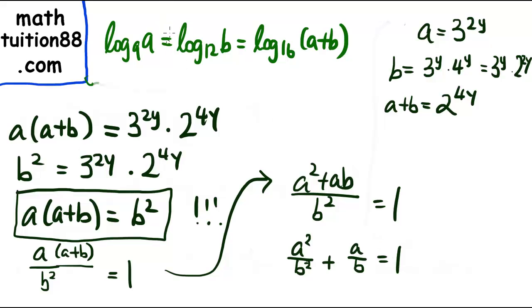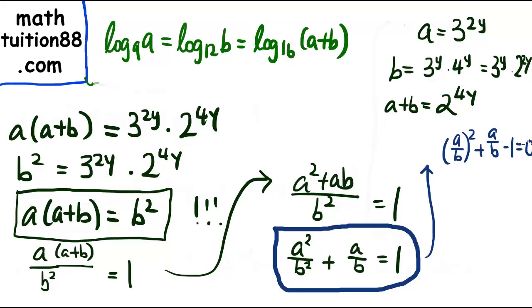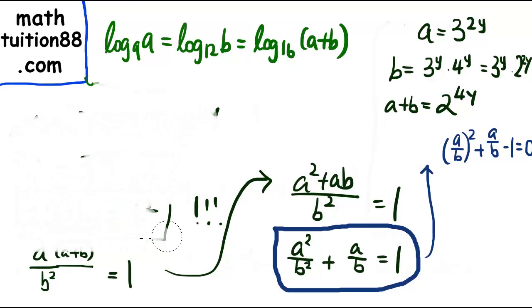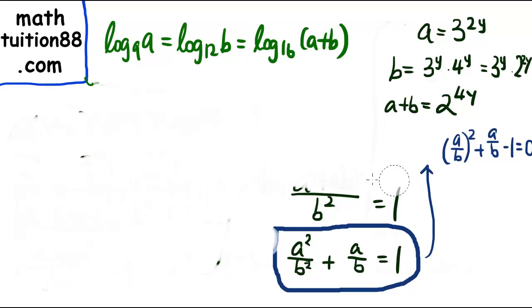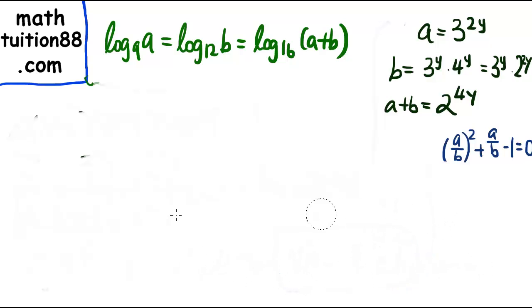So now, by now we can see that something special is coming out. We have obtained an equation in terms of a/b. So let me write out the conclusion here. We can conclude that (a/b)² + a/b - 1 = 0. This is actually a quadratic equation in a/b. So we are almost there because we just need to solve for what is a/b.